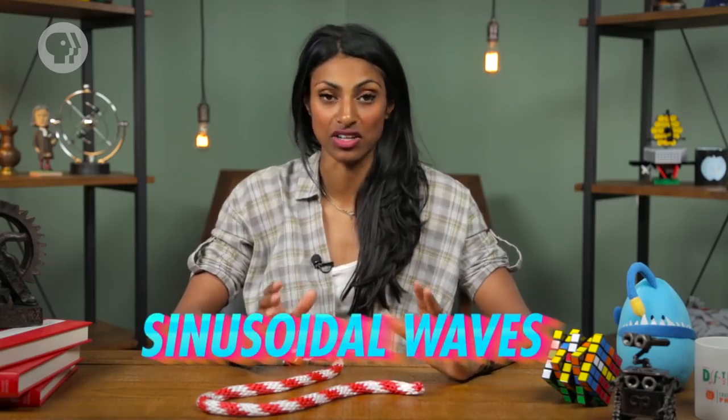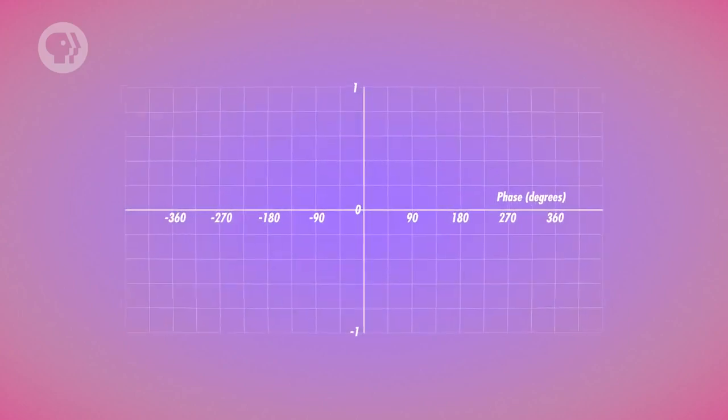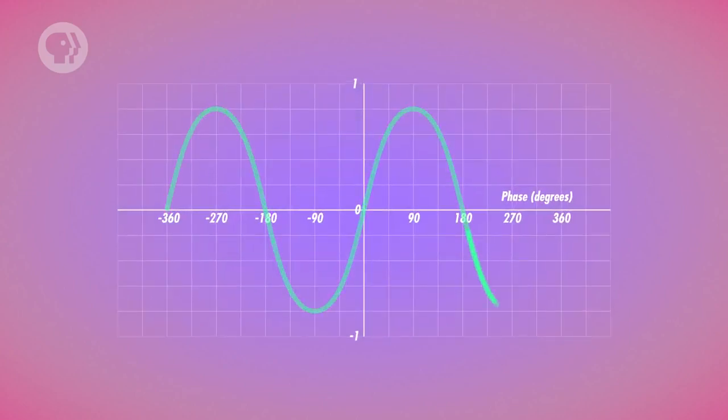Now, things that cause simple harmonic oscillation move in such a way that they create sinusoidal waves. Meaning that if you plotted the waves on a graph, they'd look a lot like the graph of sine x.